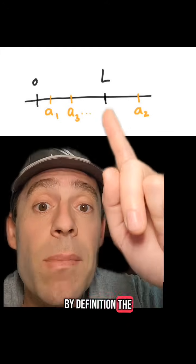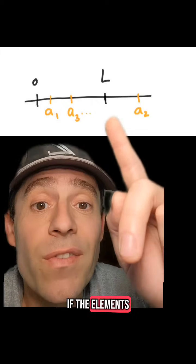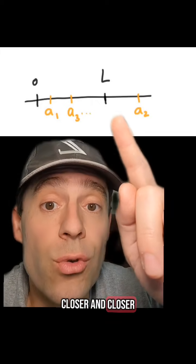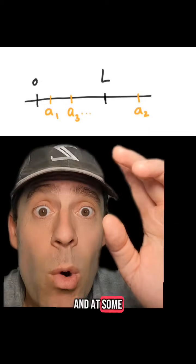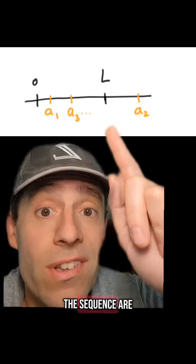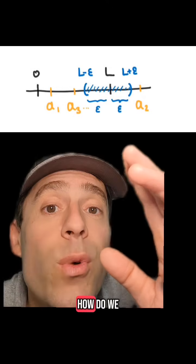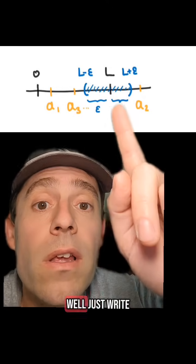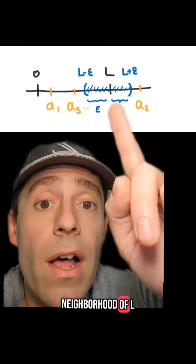By definition, the limit will be L if the elements of the sequence get closer and closer and closer to L. And at some point, all of the terms in the sequence are really close to L. So how do we say that mathematically? Well, just write a very small neighborhood of L.